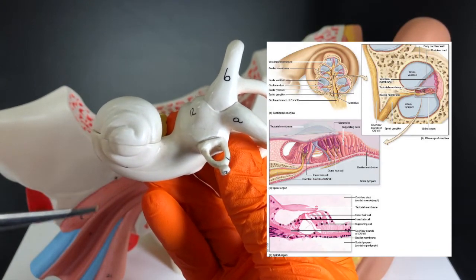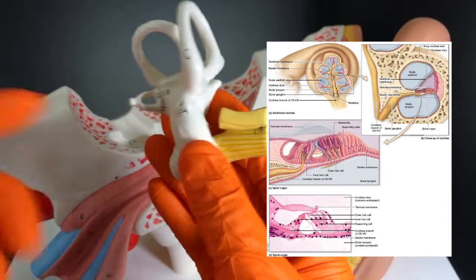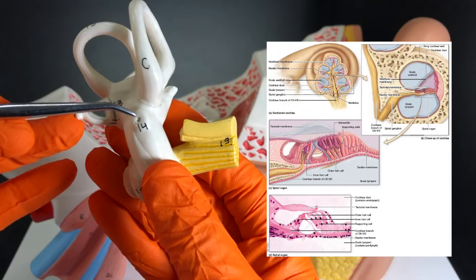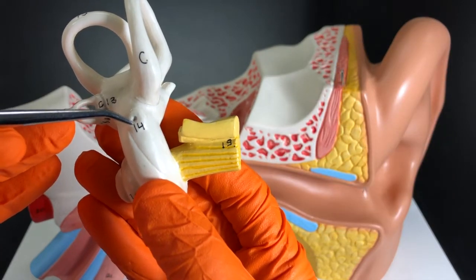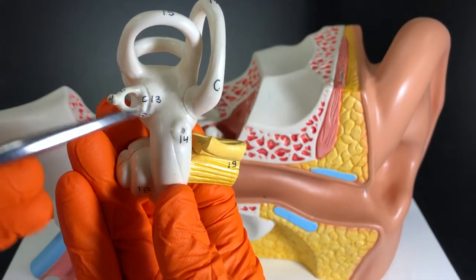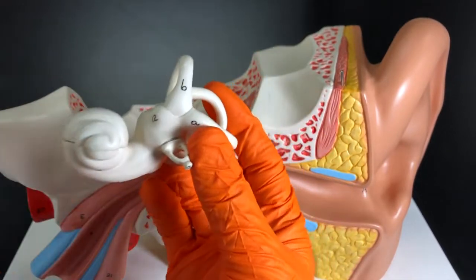Any other sound waves in that area can then go into the scala tympani or the tympanic duct, and then whatever is left over will get absorbed in this area. The round window is what bulges, so that is how the oval window and the round window are related to sound.